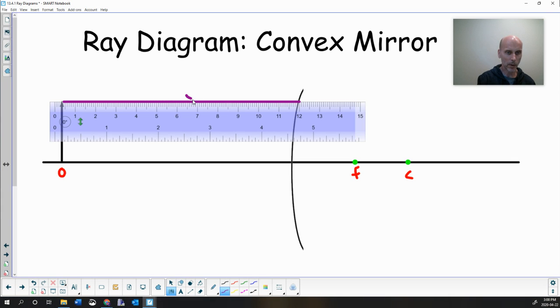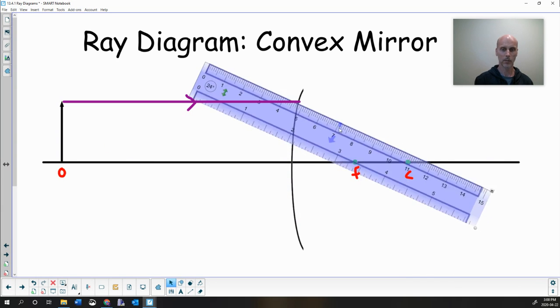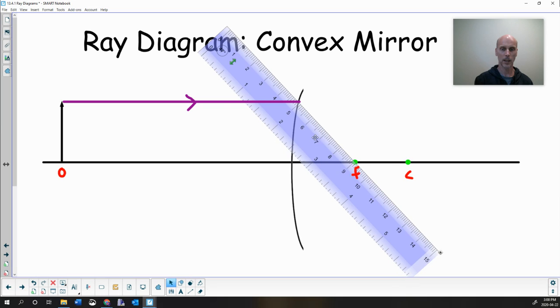And now we'll remind ourselves the difference between a convex and a concave mirror is the whole idea of the focal point. So when this parallel ray hits the mirror, remember convex mirrors have this characteristic where they reflect the ray away from this virtual focal point. So I'll start by drawing this ray this way.